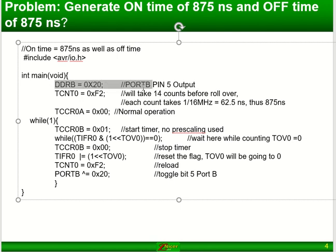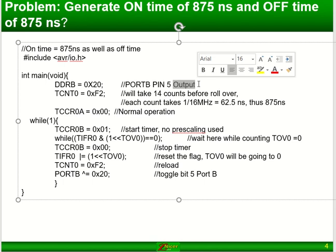In this first line, I've set up DDRB to be hex 20, which means I made pin number 5 on port B a 1, setting it up for an output. The reason I'm doing that is I use the Arduino, and on the Arduino there's an LED connected to port B pin number 5.